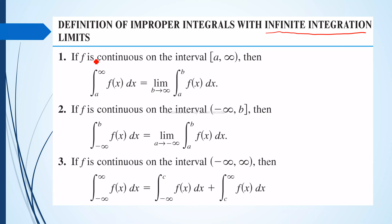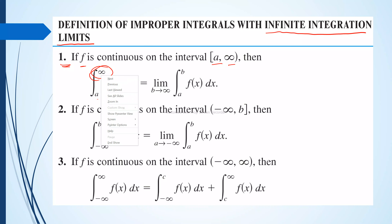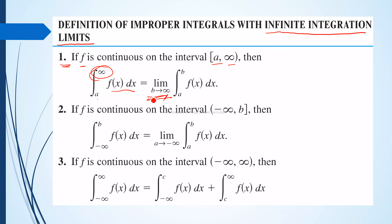The first type of improper integral with infinite integration limits has its upper or lower or both limits approaching infinity. The first definition: if the function f is continuous on the interval a to b, then the integral of f(x) dx from a to positive infinity is equal to the limit of the integral of f(x) dx from a to b, as b approaches positive infinity. That is the first condition — upper limit approaches positive infinity.